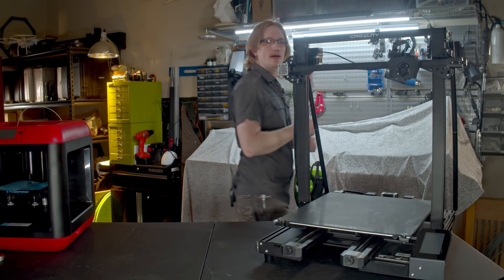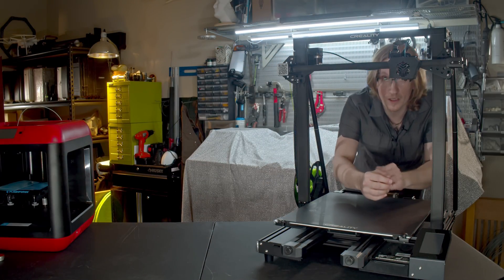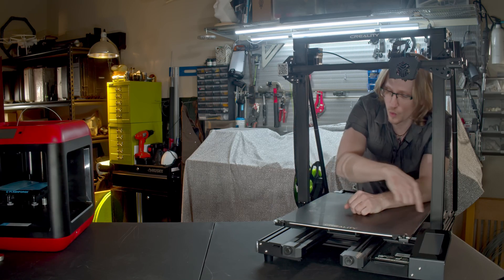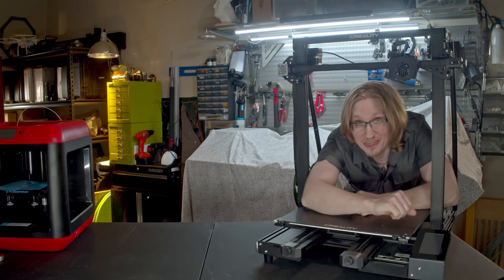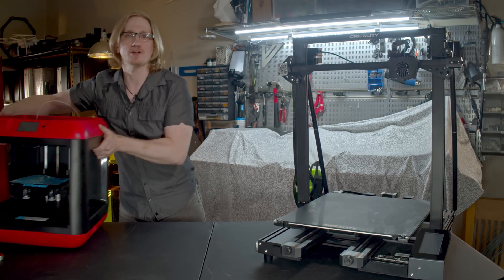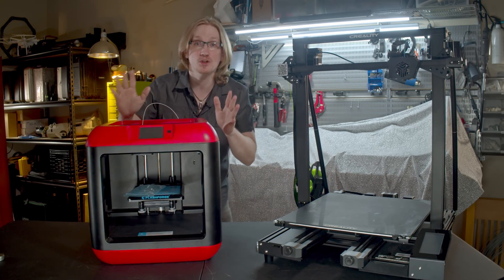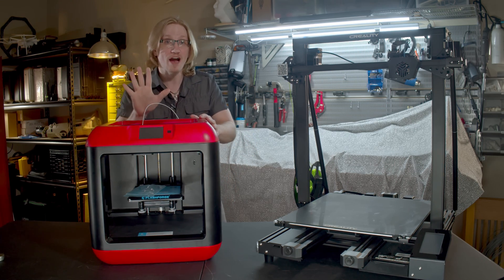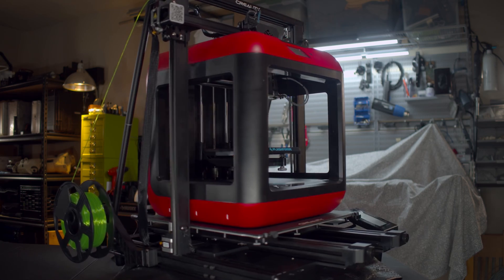The CR6 Max has a 400mm cubed build volume. For us Americans, that's almost 15 and 3 quarter inches in length, width, and height. That's huge! For comparison, here's my very first printer, the Flashforge Finder. It's an absolute workhorse, but its entire frame is just 5mm shy of fitting in this build volume.